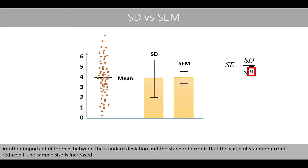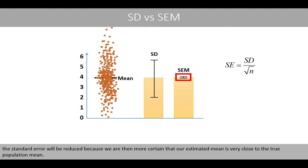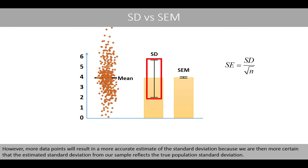Another important difference between the standard deviation and the standard error is that the value of the standard error is reduced if the sample size is increased. For example, if you increase the sample size, the standard error will be reduced because we are then more certain that our estimated mean is very close to the true population mean. In contrast, the standard deviation is expected to have about the same value, because the spread of the data will not be reduced since an increased sample size will not affect the spread. However, more data points will result in a more accurate estimate of the standard deviation, because we are then more certain that the estimated standard deviation from our sample reflects the true population standard deviation.